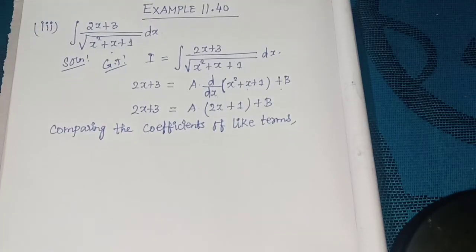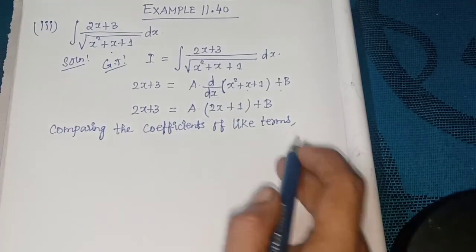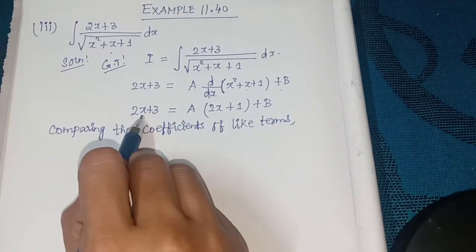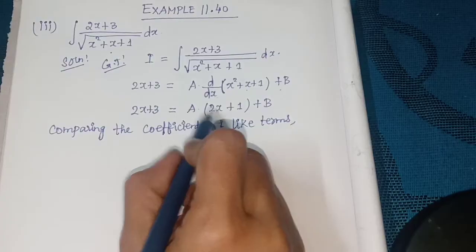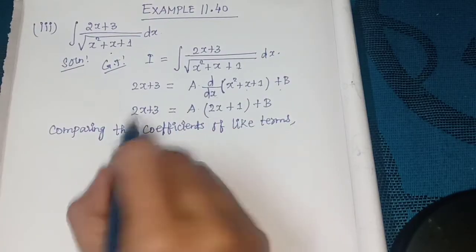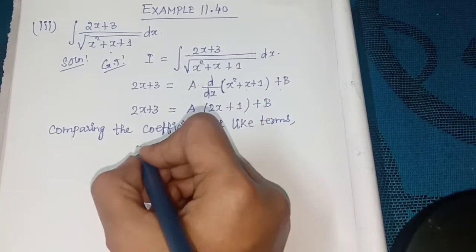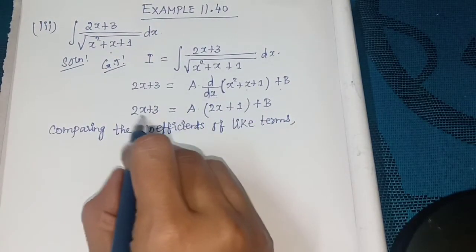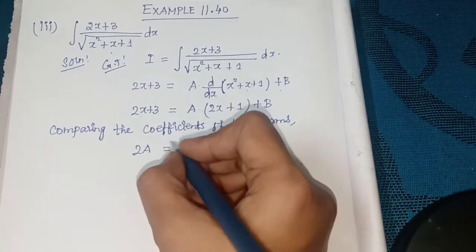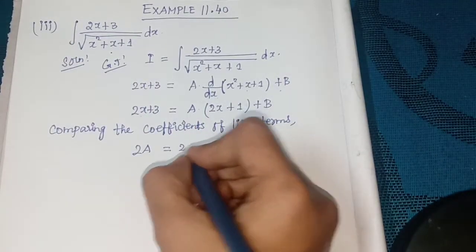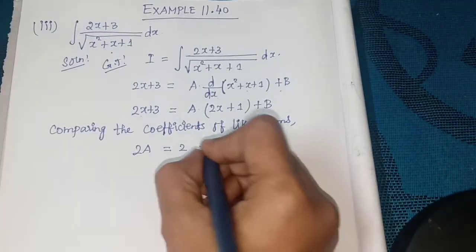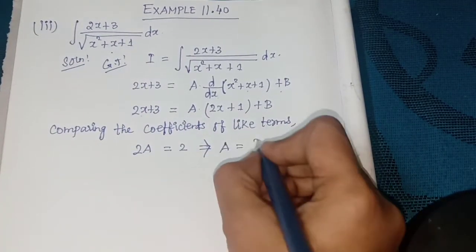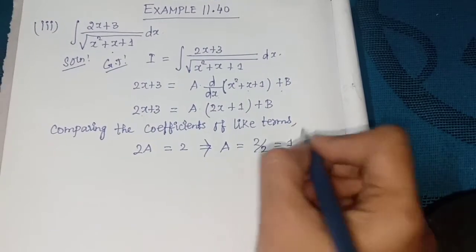Comparing the coefficient of like terms: comparing the x terms, 2a = 2, which implies a = 2/2 = 1. So a = 1.